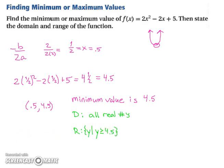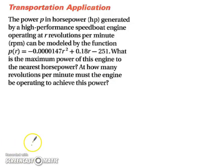All right, let's try our real world application. The power p in horsepower hp generated by a high-performance speedboat engine operating at r revolutions per minute, rpms, can be modeled by this crazy function here. So what is the maximum power of this engine to the nearest horsepower? And how many revolutions per minute must the engine be operating to achieve this power?